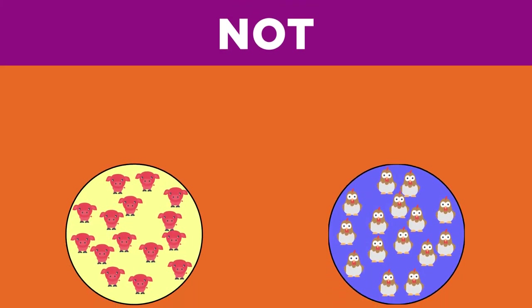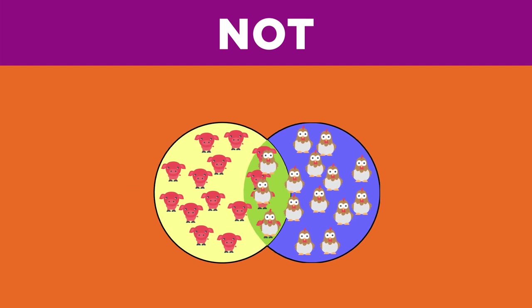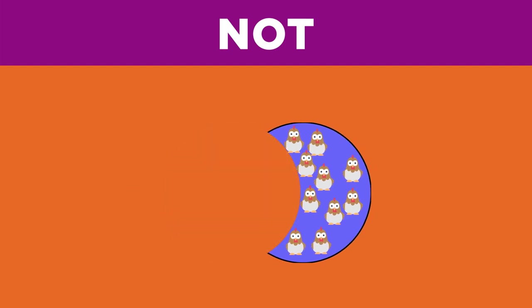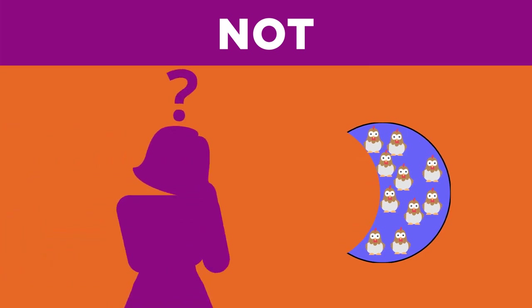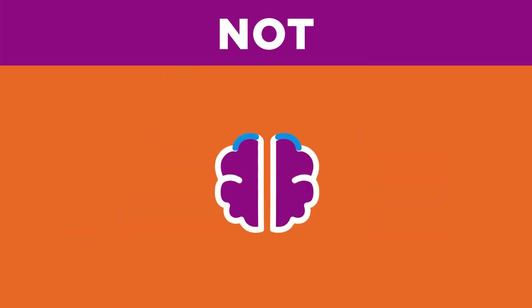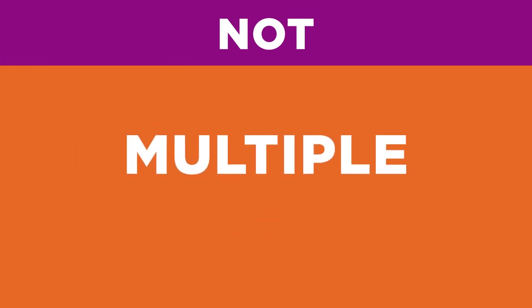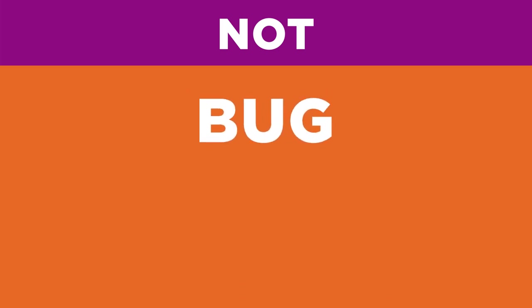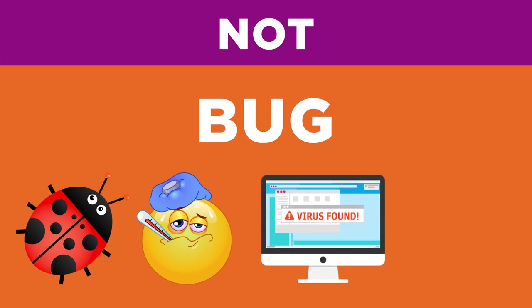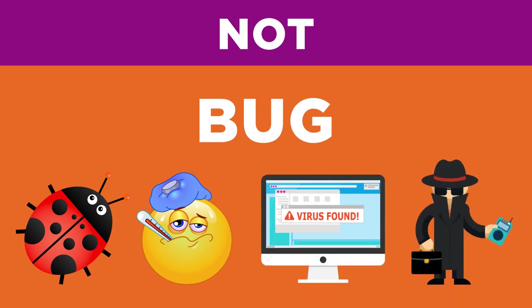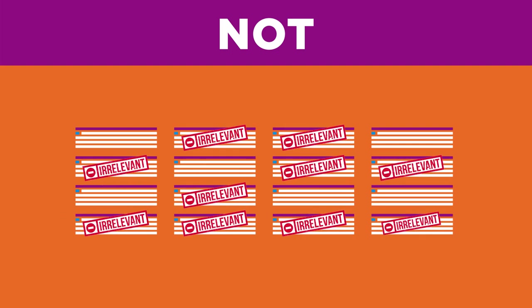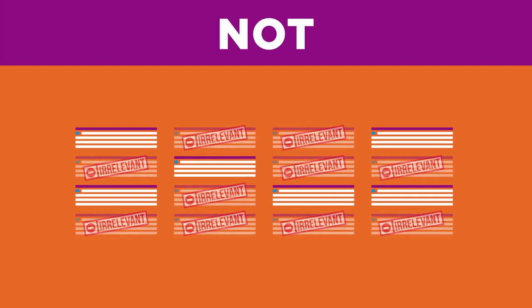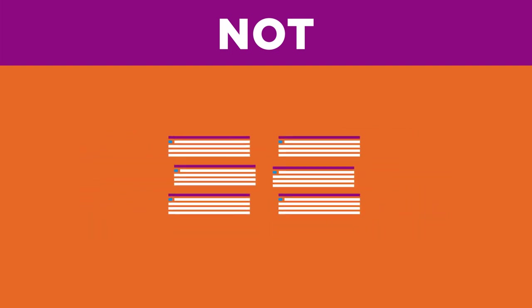The final Boolean operator is NOT. Here's how it works. NOT tells the computer that you want one keyword, but not the other in your search results. So how does using NOT help you? You may not even think about the fact that your keyword may have multiple meanings. For example, when you search for BUG, are you expecting results for an insect, the flu, a computer virus, or a spy device? If you're getting a lot of results that have nothing to do with your topic, use a second keyword with NOT to eliminate results that mention the second keyword. This narrows your results.